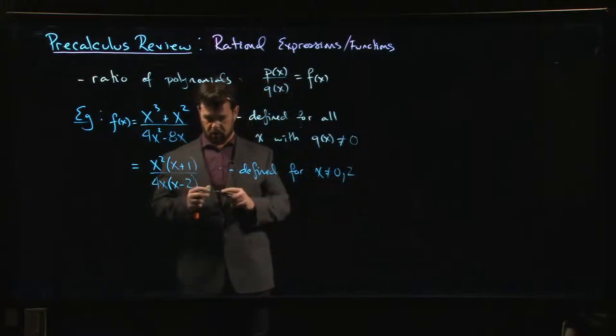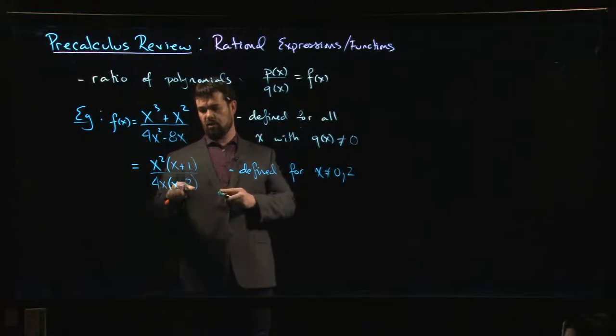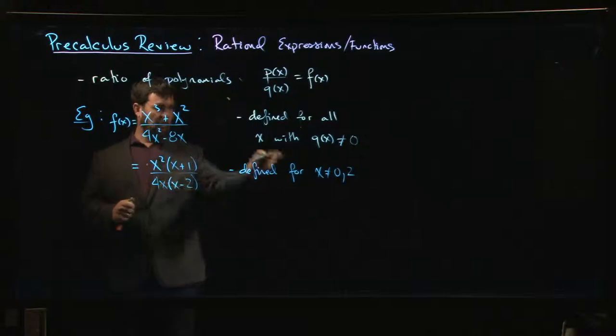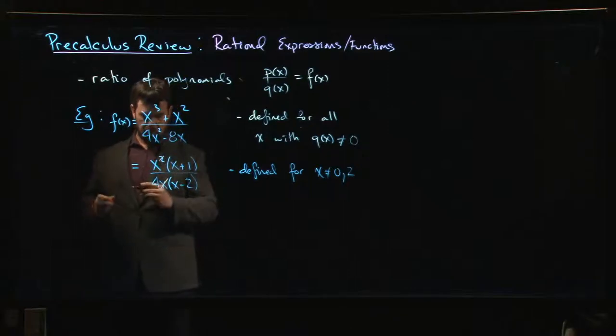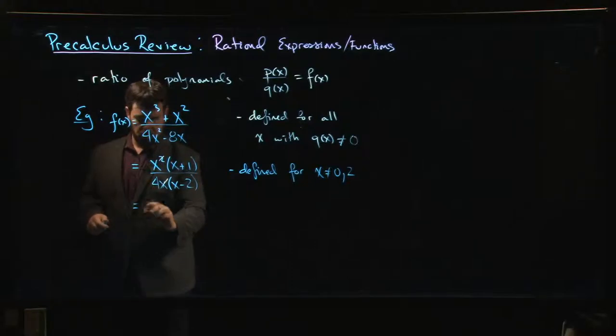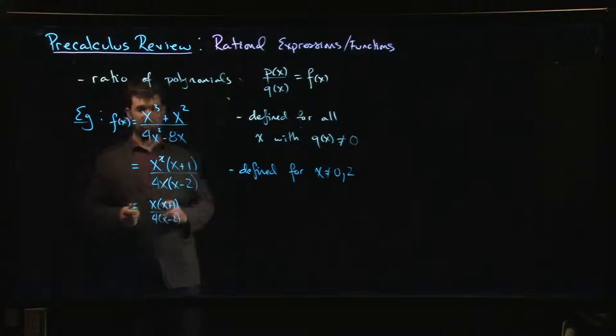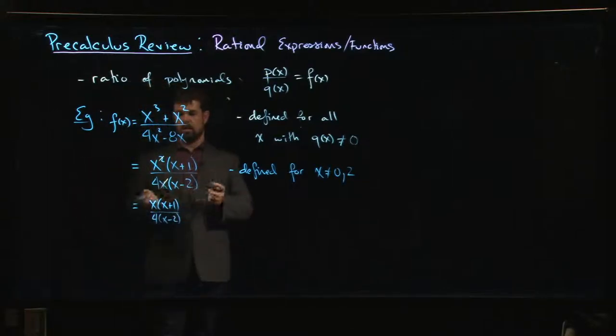I have those two zeros in the denominator I want to avoid. As long as I stay away from those two, then yes, I can simplify. I can cancel this X with one of the two upstairs, and I'm going to get X times X plus 1 over 4 times X minus 2.